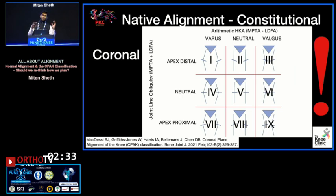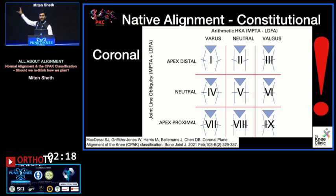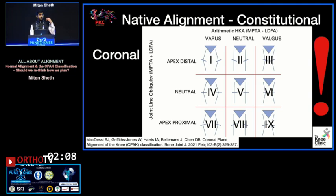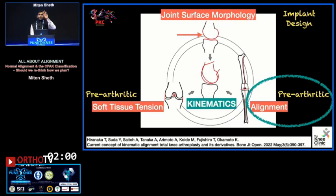Considering joint line obliquity and the arithmetic hip-knee angle — which is the estimation of alignments before arthritis — we can divide patients into nine classes. Most Indian patients lie in class one type one or type two. So if we do knee arthroplasty in a systematic fashion and make all knees straight, we bring them all to type five. Would you want to do that in every case, now that we know more about native alignment in the coronal plane?